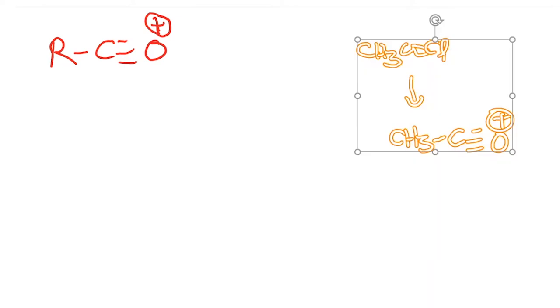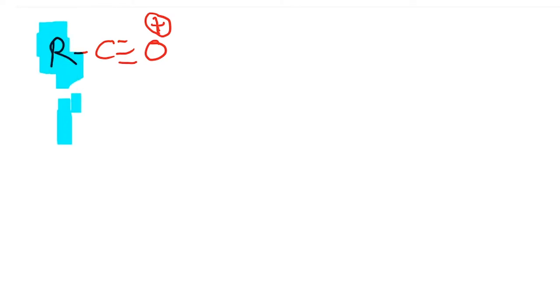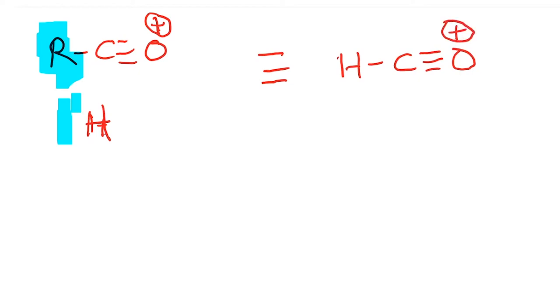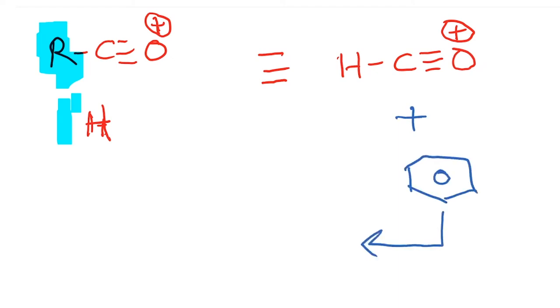So now if we were to start with R equals H, replacing R with hydrogen, then we would want to generate an intermediate such as HC≡O+. This reacts with benzene and then the product that you would eventually get would be benzaldehyde — this continues to be a Friedel-Crafts acylation.